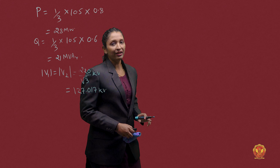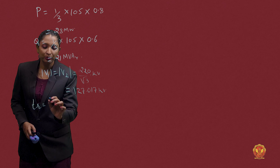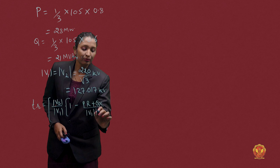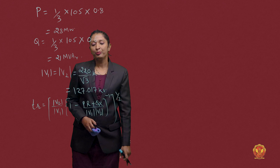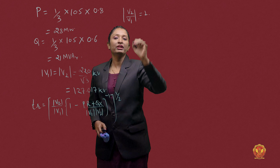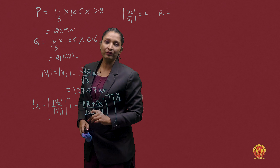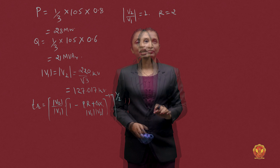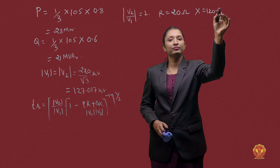We derived the tap-setting equation in the previous lecture — refer to it for the derivation. The equation is: Ts equals the magnitude of V2 divided by V1, multiplied by the inverse of the quantity [1 minus (PR + QX) divided by V1·V2], all under a square root. Here, the magnitude of V2/V1 is 1. The impedance is 20 + j120 ohms, so R equals 20 ohms and X equals 120 ohms. We now know P, Q, R, X, V1, and V2.